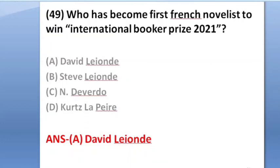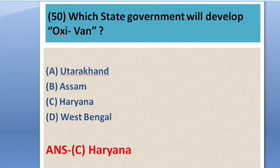Question number 50: Which government will develop Oxfam? Options: Uttarakhand, Ayursharm, Haryana, West Bengal. The answer is option C — Haryana.